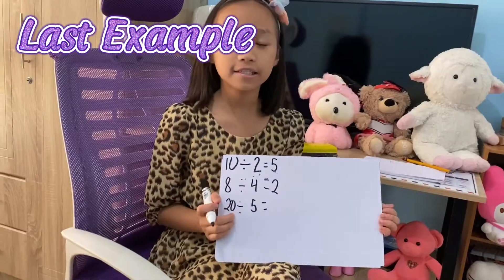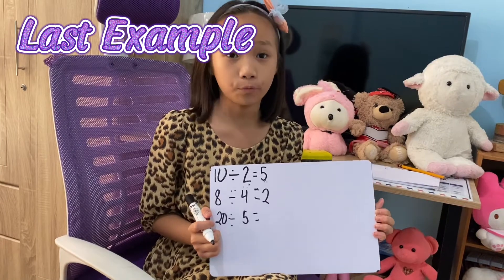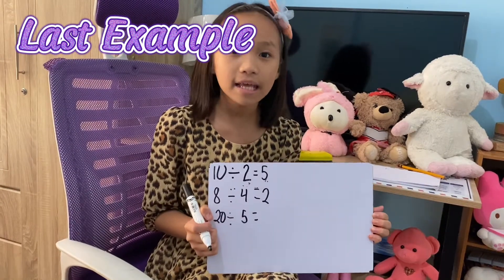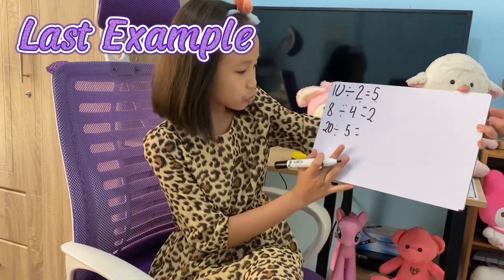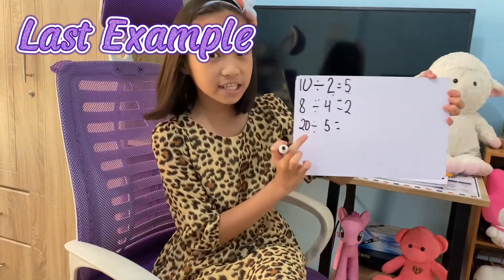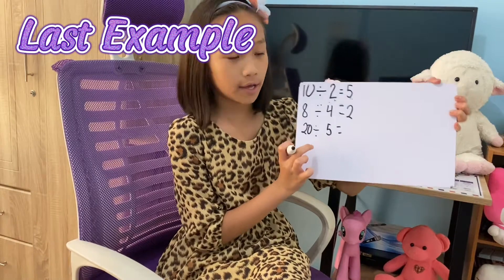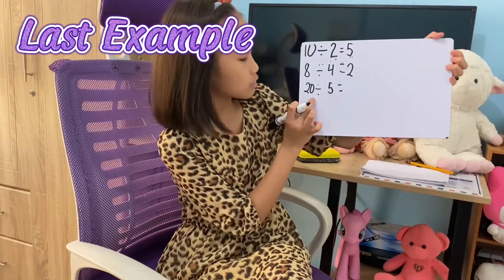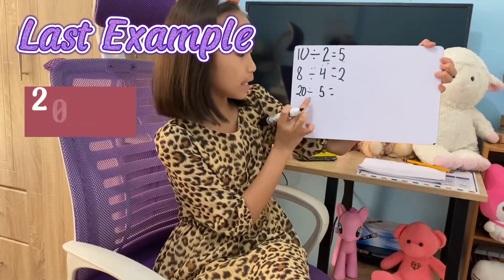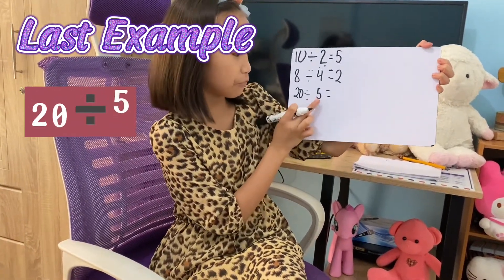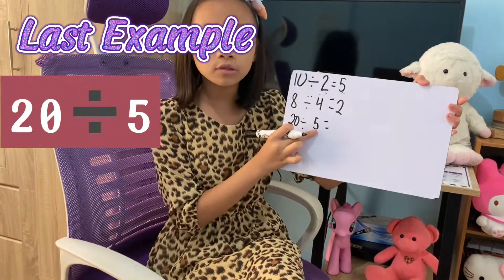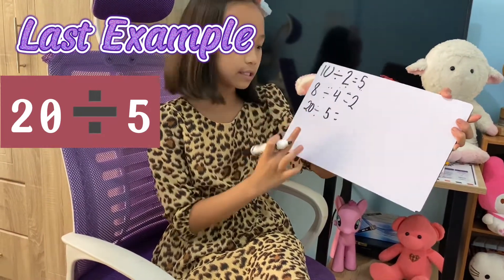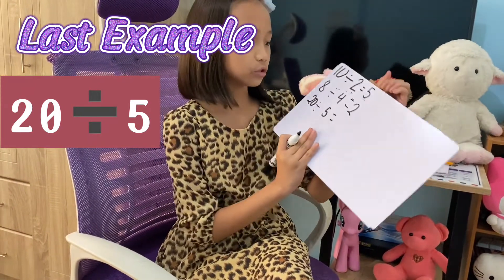So kids, this is our third example, which is also the last one. This is the hard one. Let's try 20 divided by 5. We're going to do the exact same as with 8. So let's write down 20 lines.